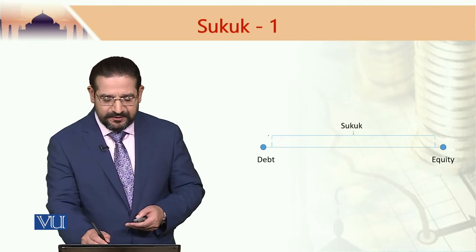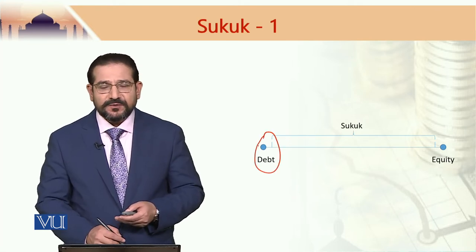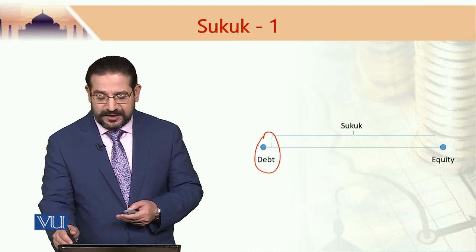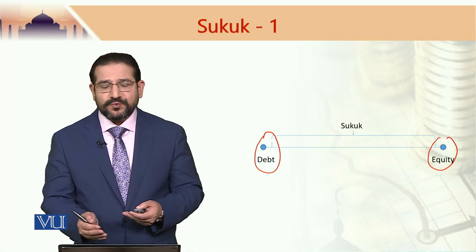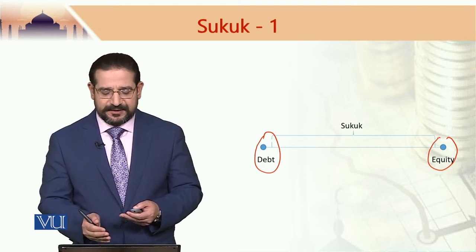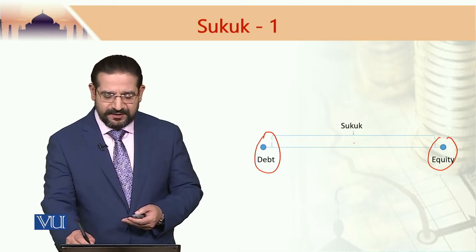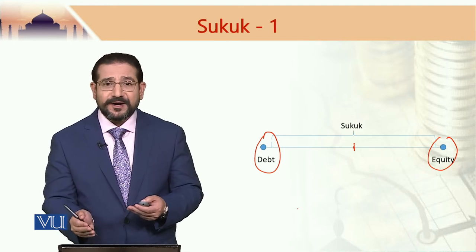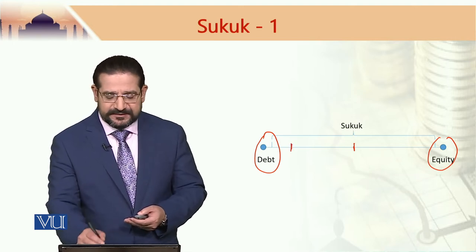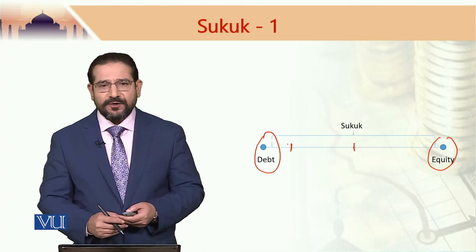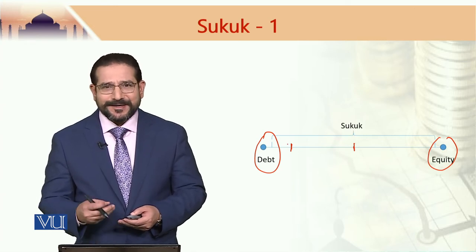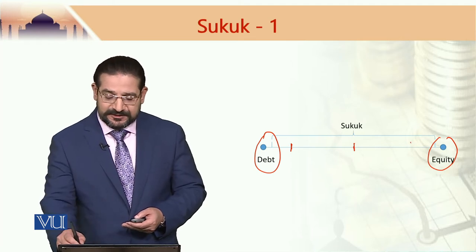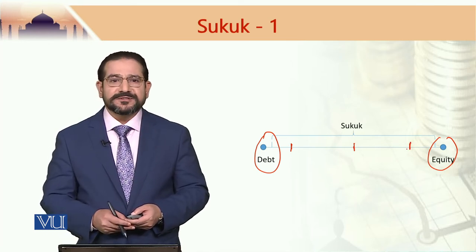With the help of this diagram, we can depict where a Sukuk may lie on the capital structure of a firm. We have debt instruments on one side of the equation and equity instruments on the other. In between, a Sukuk may lie — in some cases, if it is more like debt, it may lie closer to debt, or when it depicts more equity-like characteristics, it may move closer to equity.